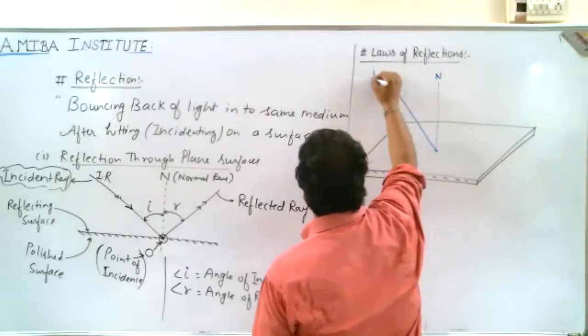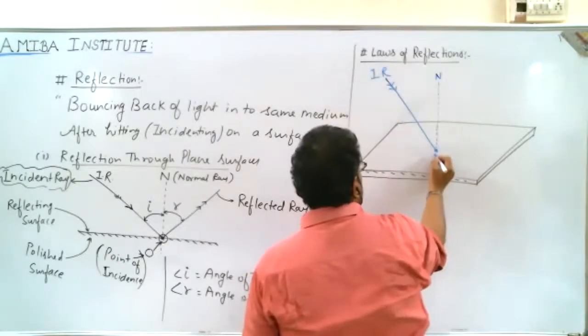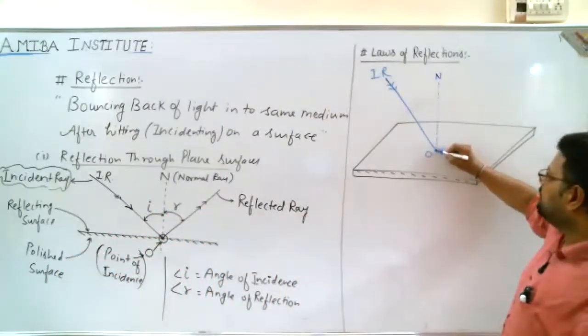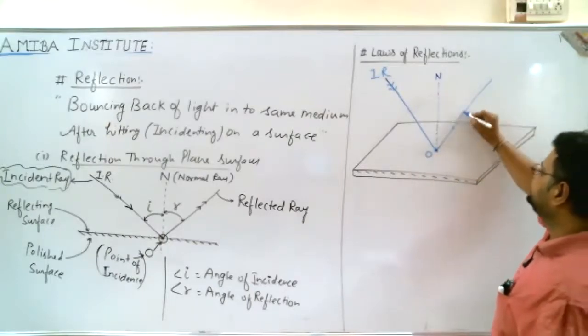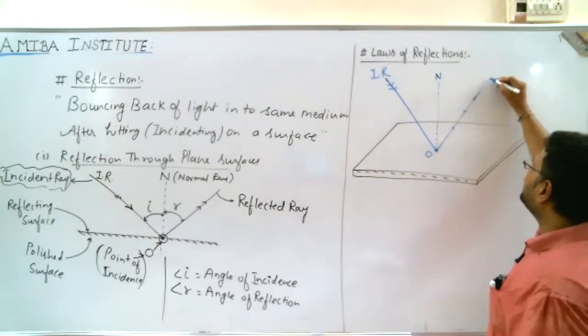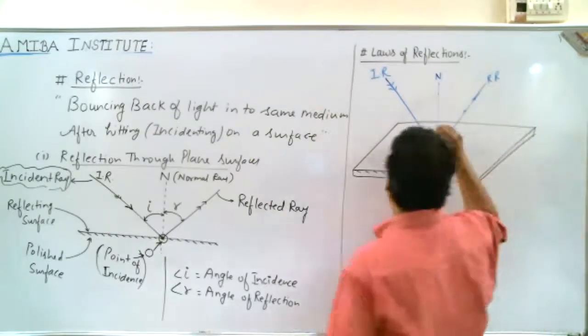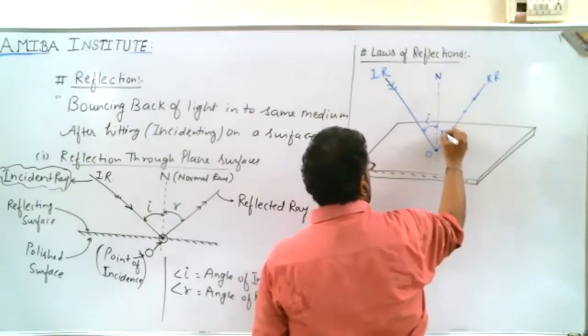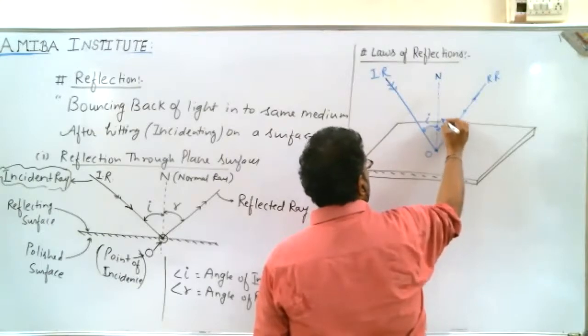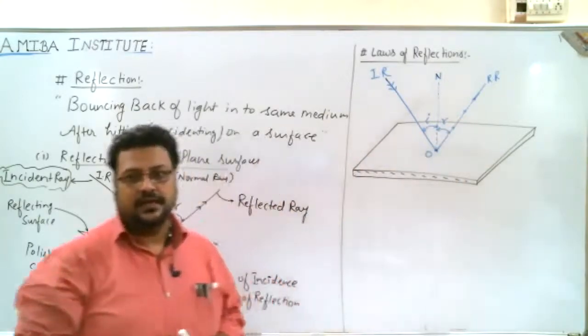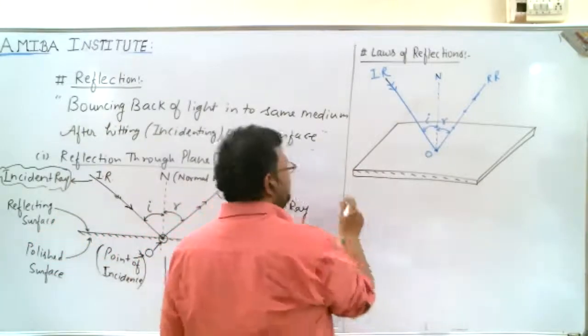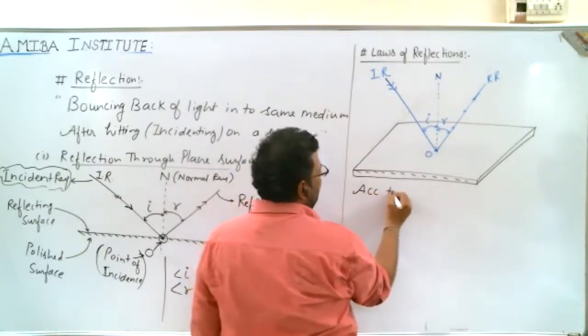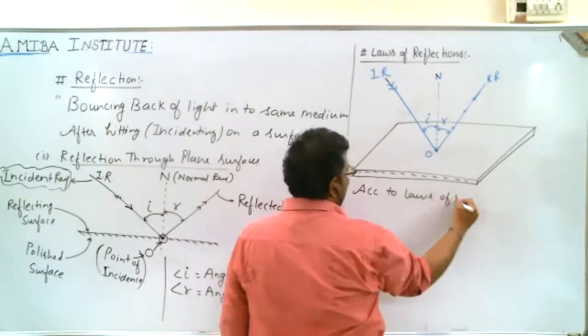Let's suppose it is polished from the back and here there is a normal line. This is our incident ray at the point of incidence, and from here it bounces back as the reflected ray. This angle between normal and incident ray is angle i, and the angle between normal and reflected ray is angle r.